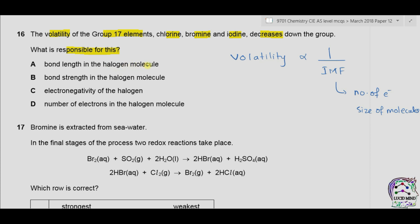Option A: bond length in the halogen molecule — bond length does not affect volatility, which depends on intermolecular forces, not bonds. Option B: bond strength — again, not related to volatility. Option C: electronegativity of halogen — since molecules are made of similar atoms (Br₂, I₂, Cl₂, F₂), electronegativity has no effect. Option D: the number of electrons — increasing electrons increases intermolecular forces, so volatility decreases. The answer is therefore D.